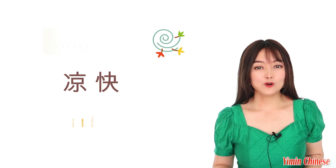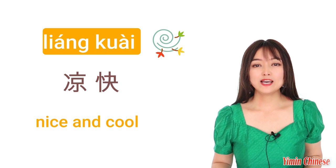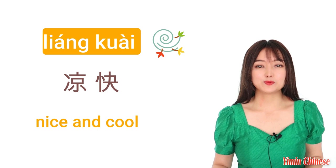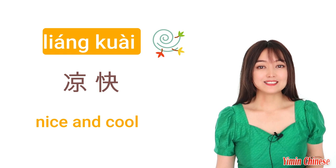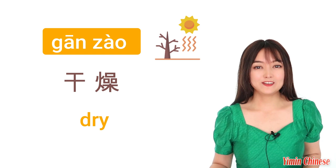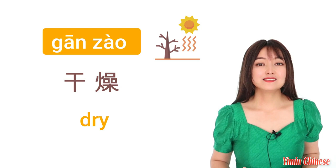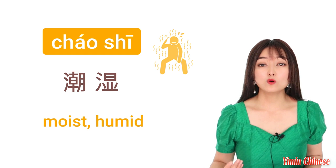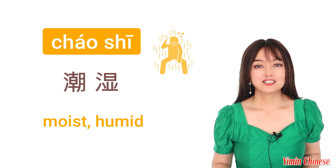Besides 热和冷，我们还有暖和，it's warm — 不是热，是很舒服的，一点点热，very comfortable, a little warm. 还有凉快，it's nice and cool — 也不是冷，不冷，还是很舒服，like the summer evening or after a rain. 我们还有干燥，it's dry — 就是没有水分或者水分很少。Opposite of 干燥 is 潮湿，most humid — 就是空气里有很多水分。